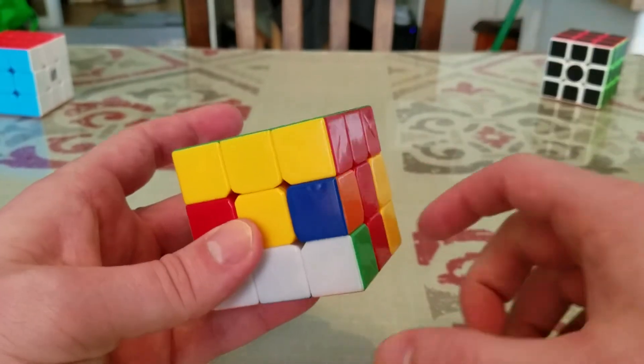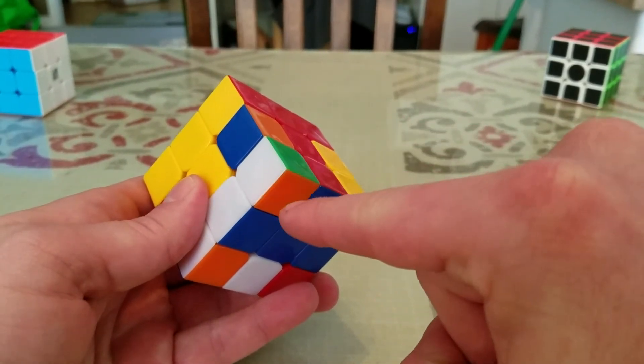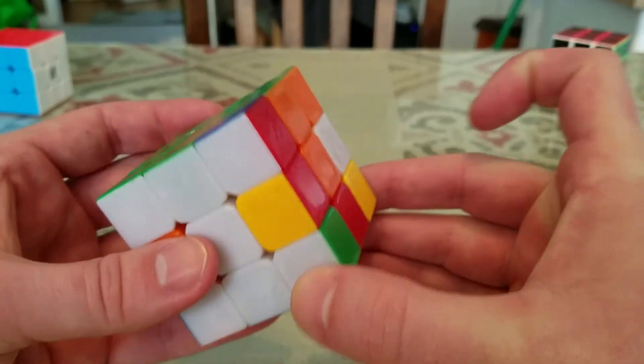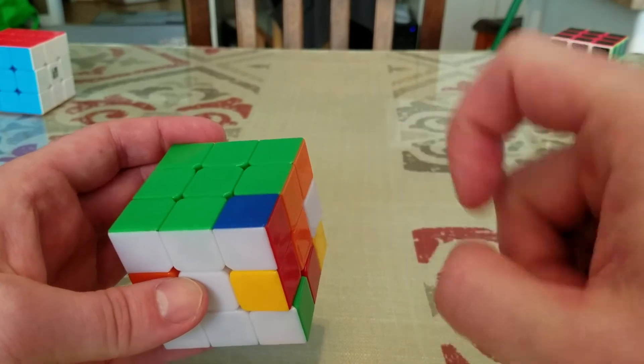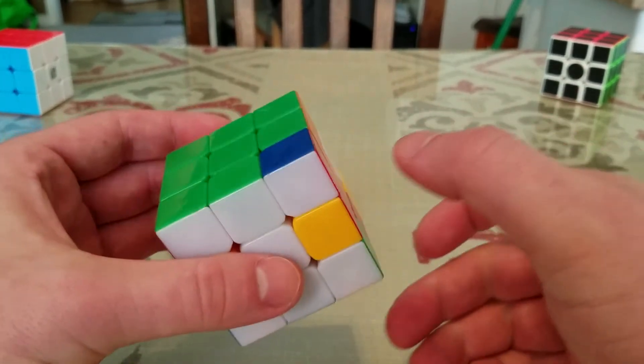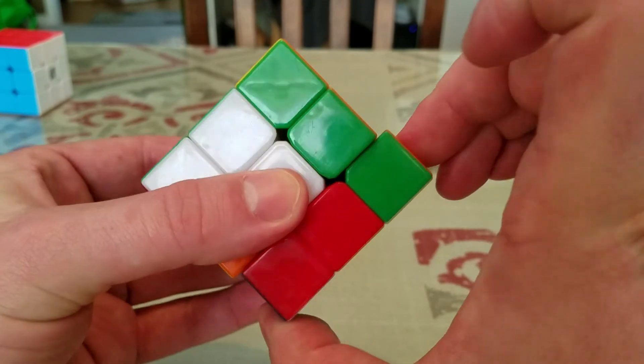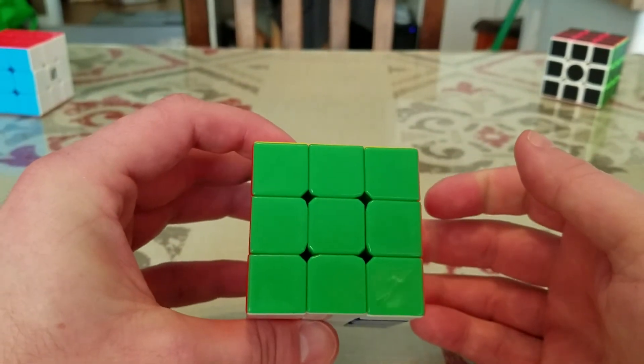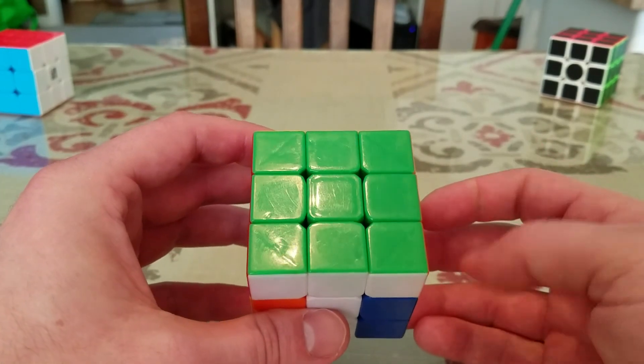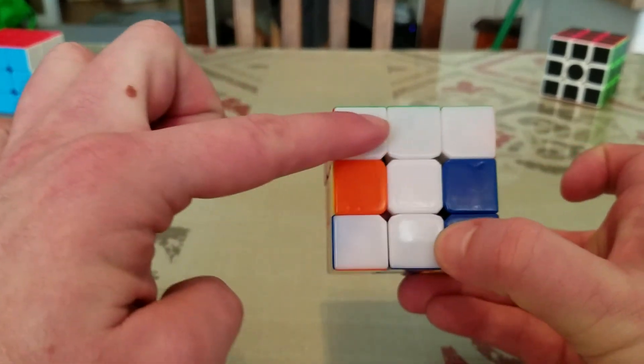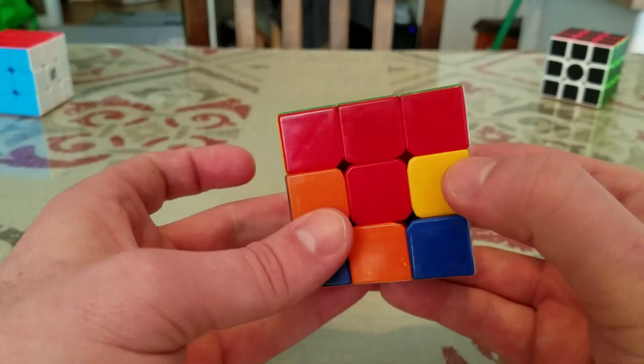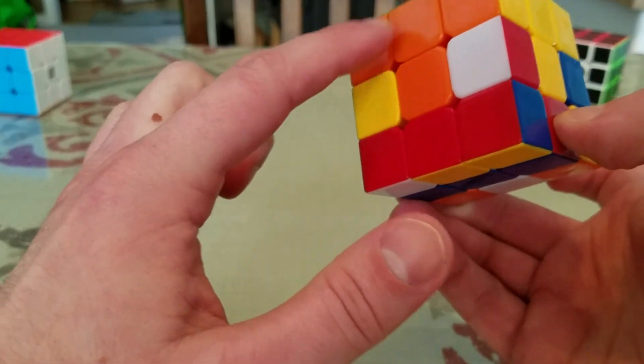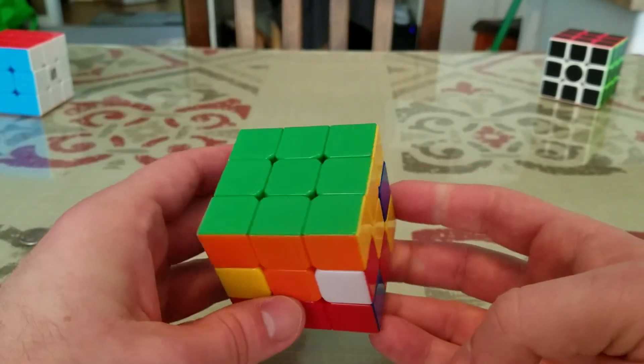Last corner, this is the green, orange, and white corner. We're going to position that green spot underneath the corner that it needs to go in. Now we're going to do down, bottom, up, bottom. Now, you'll notice not only do you have the green side completely solved, but you'll notice that the sides of each color should all line up and match up. If you've done that, then you've successfully completed step number two.